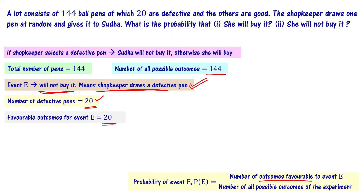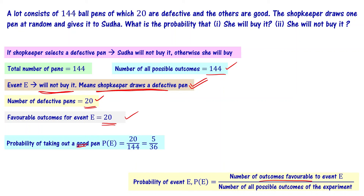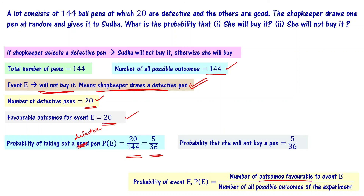Favorable outcomes are 20 and all possible outcomes are 144. The probability of taking out a defective pen is 20 by 144, which equals 5 by 36, since 5 times 4 is 20 and 36 times 4 is 144. So the probability that she will not buy the pen is 5 by 36.